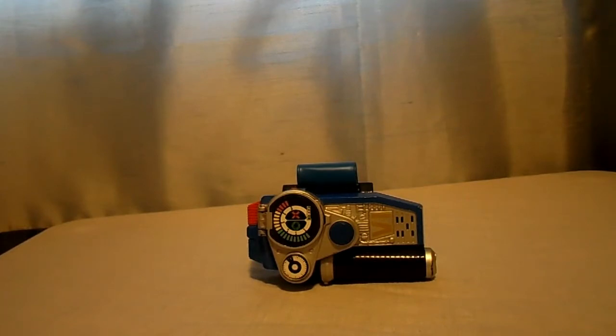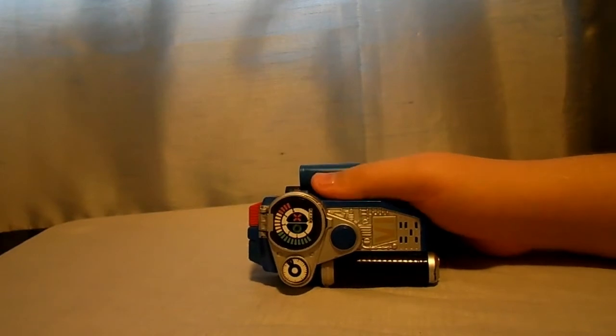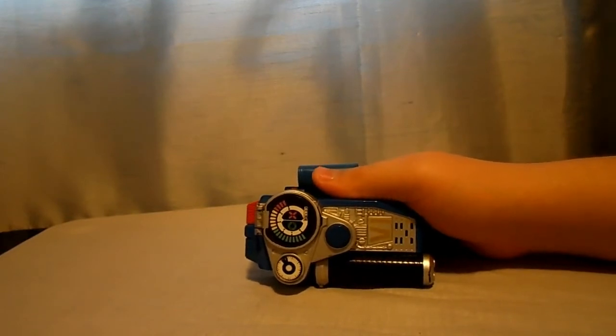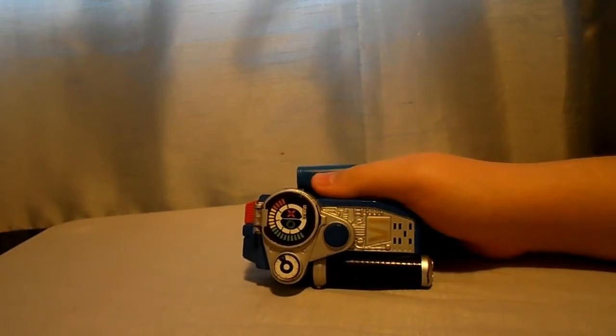This time I'm reviewing the Omega Morpher from Power Rangers SPD. This Morpher was used by Sam in the series and Sam was a future ranger, so he came from the future which I found pretty cool.